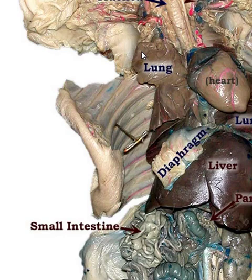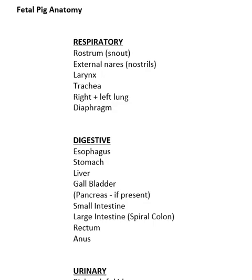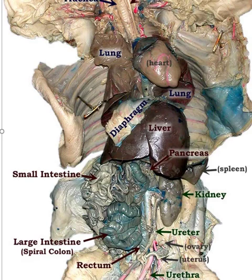Our next lab will talk about the digestive system — the stomach, intestines, and excretory organs. Here are the parts of the fetal pig you need to know: the nose is called the rostrum (you and I would call it a snout), and the nostrils — where you'd pick your nose — are called the external nares. We looked at the larynx, trachea, right and left lungs, and the diaphragm.